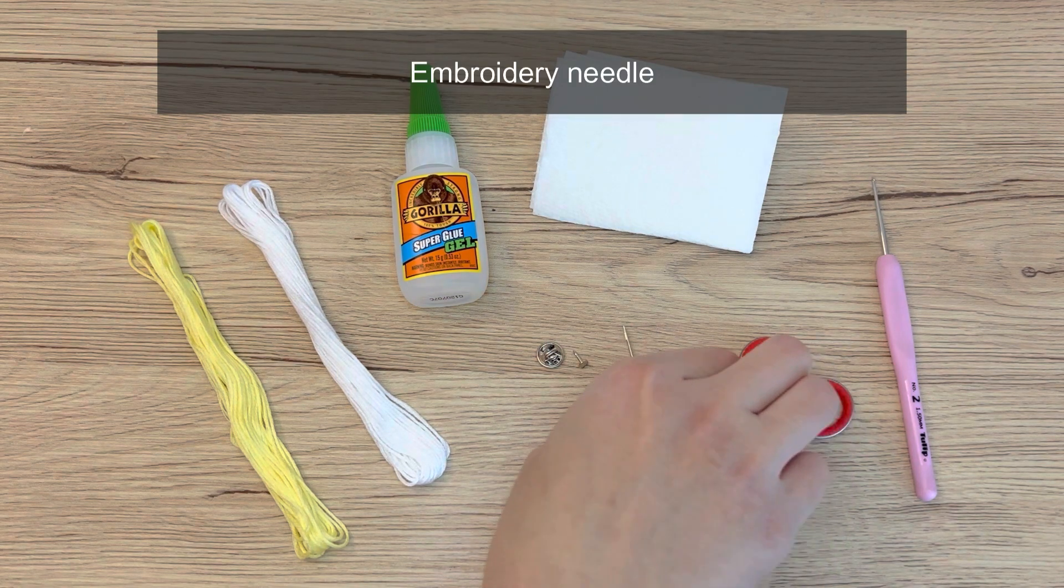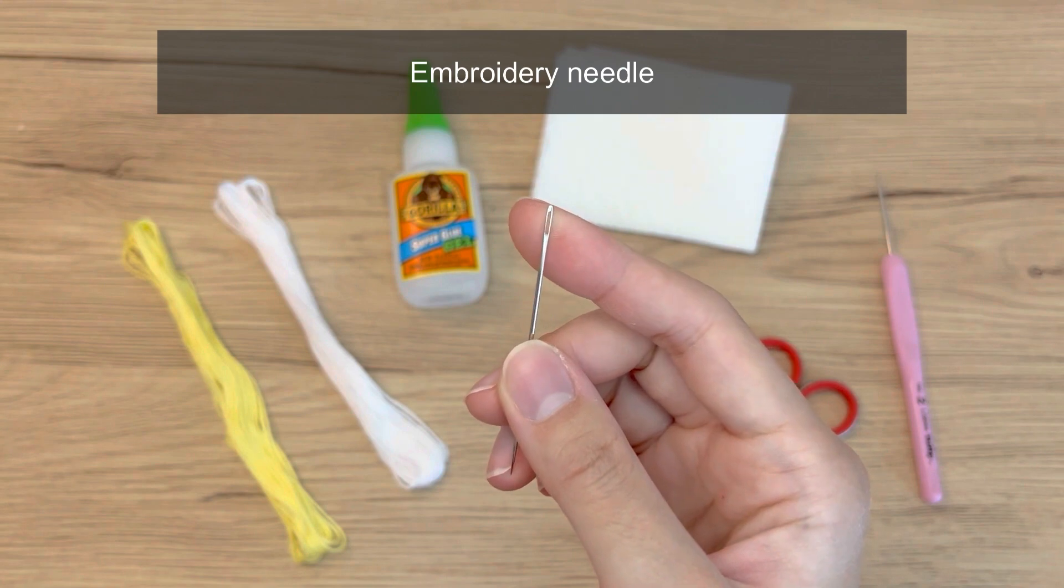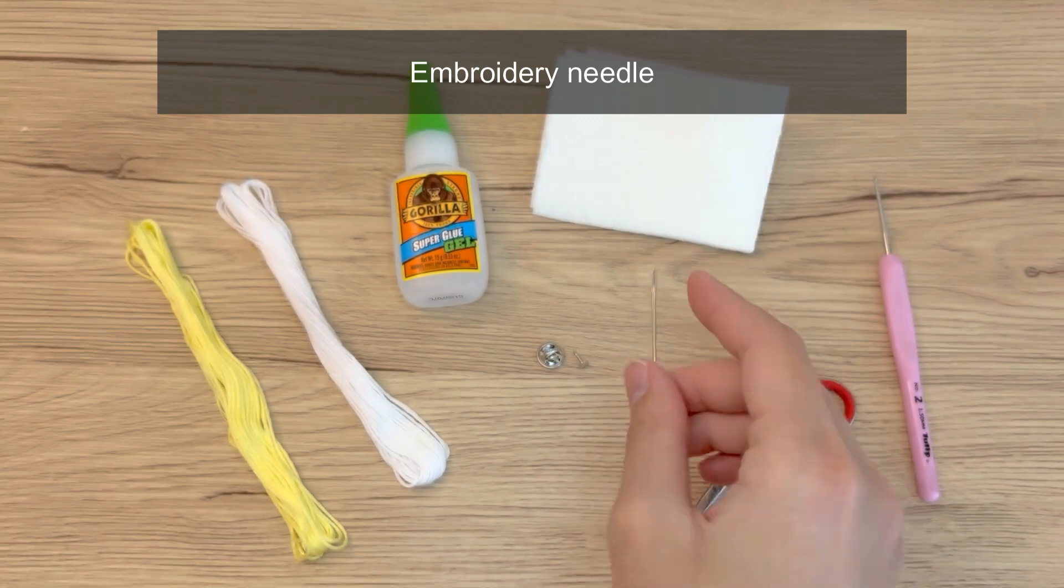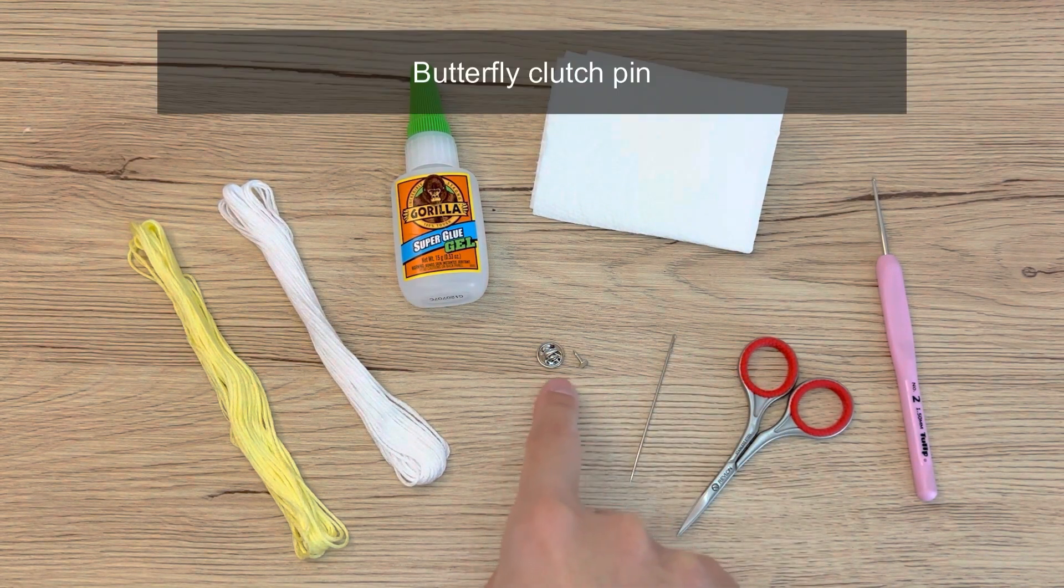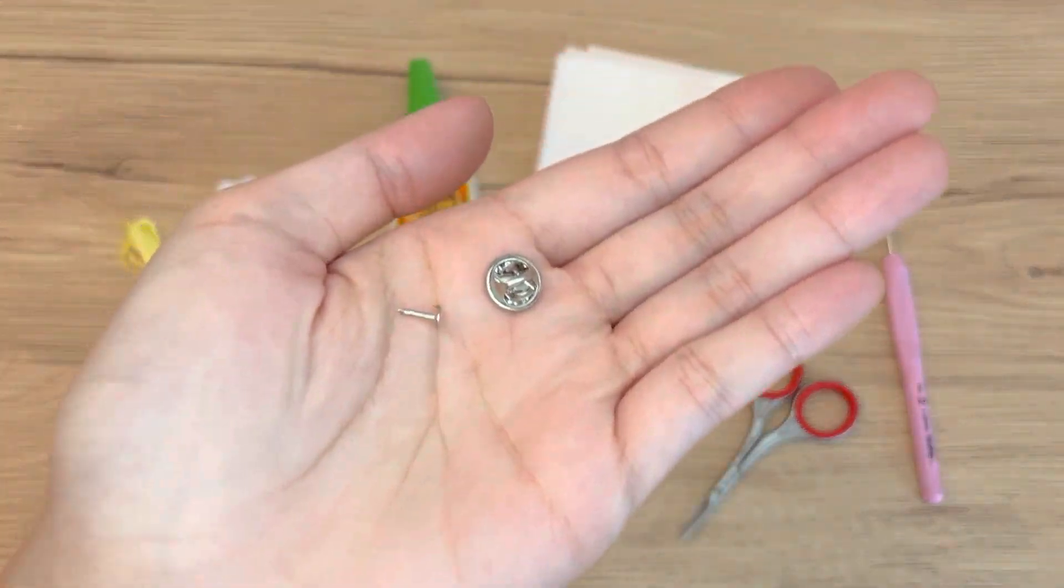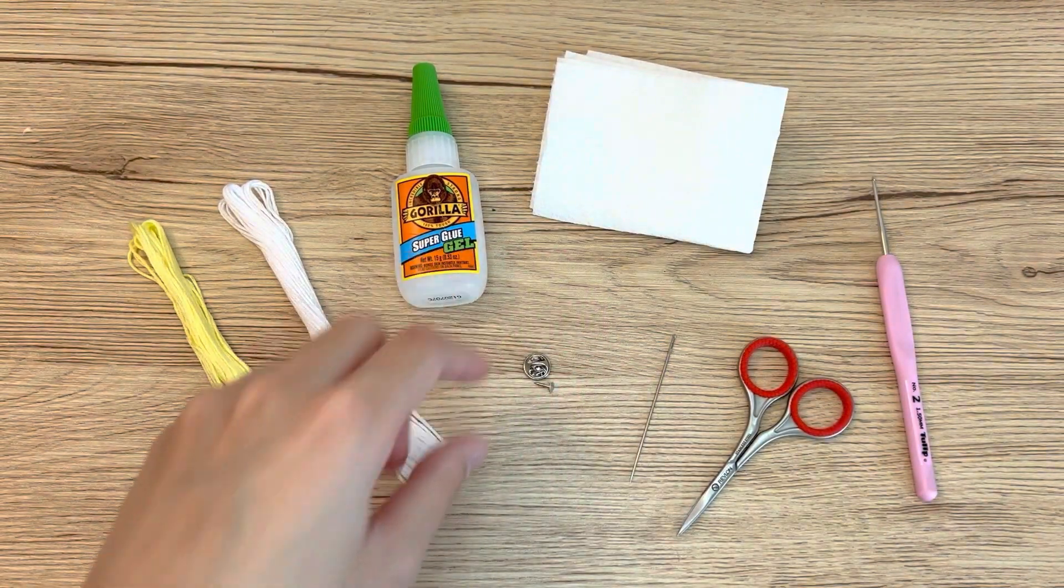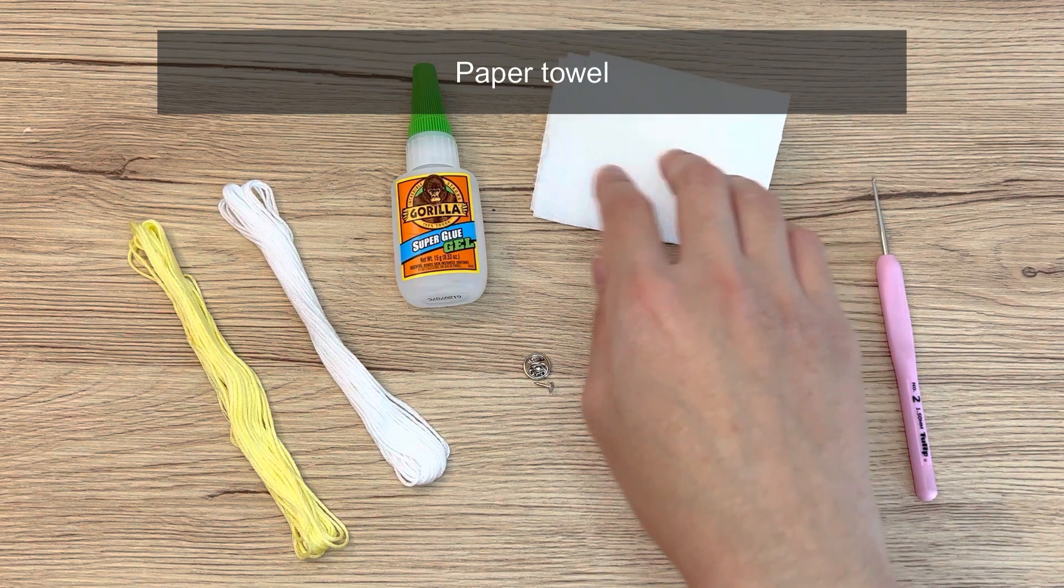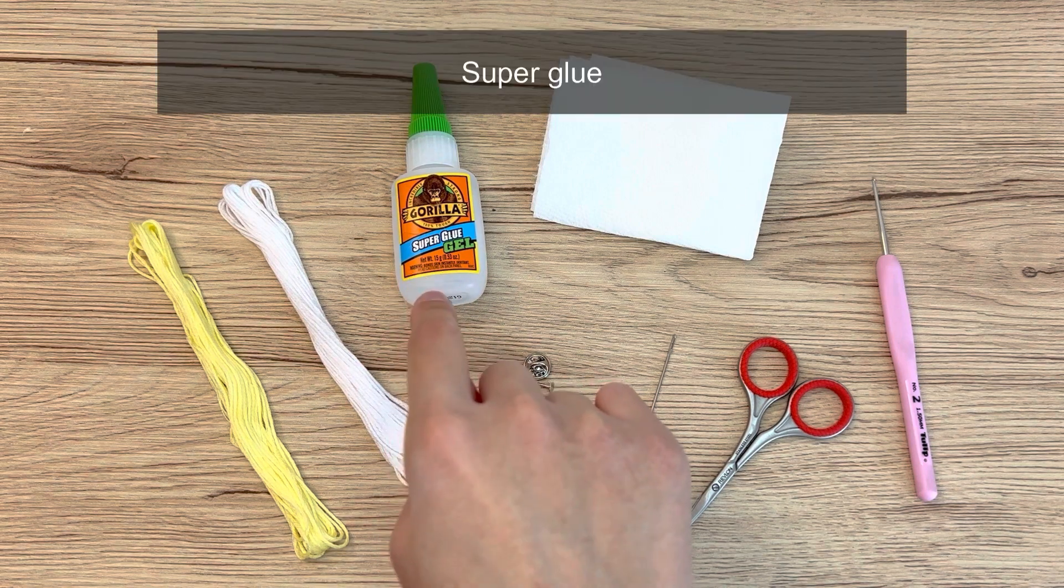Embroidery needle. This one in particular has a very small eye pin. If you have trouble inserting the thread into the needle, just get the one with bigger eye pin, butterfly clutch pins. Let me show you up close. You would also need a paper towel just for us to be able to clean off the glue. And lastly, super glue gel. I'm using Gorilla glue.